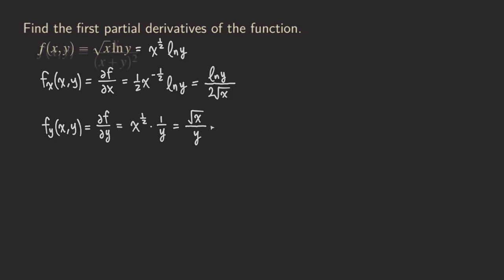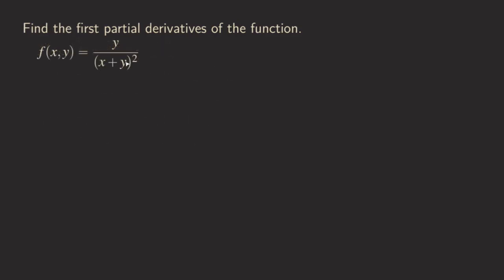Let's look at another example. In the second example, we have a rational function: y in the numerator and (x+y)² in the denominator. You may ask what should we do. We are going to think about how to simplify this to make it ready for differentiation. We could use the quotient rule as is, but it may be easier to move the denominator to the top.